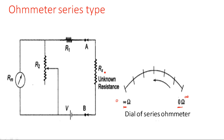Coming to the construction of the series type ohmmeter: there is a meter with current Im or IFSD, the full scale deflection current. That meter has a shunt resistor R2, which is a variable resistor — a potentiometer. The purpose of this variable resistor is to set deflection to zero under unmeasured conditions. R1 is the series resistor connected in series with the parallel combination of the meter and R2. There are two terminals A and B between which the unknown resistor Rx is connected.